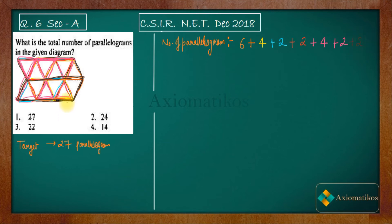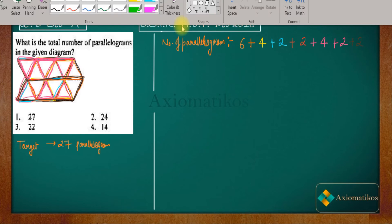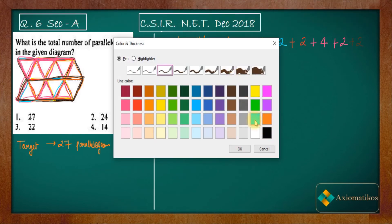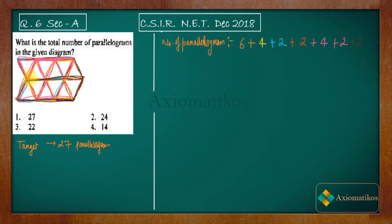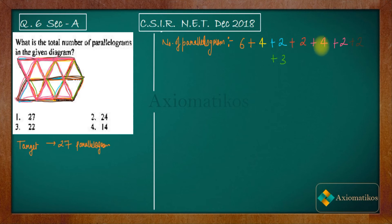Now there is a parallelogram in between all of these — two, this two, and this two — so we are getting three more. Let us add: six plus four is ten, plus two is twelve, plus two is fourteen, plus four is eighteen, plus two is twenty, plus two is twenty-two, plus three is twenty-five. Up till now we have calculated twenty-five parallelograms.